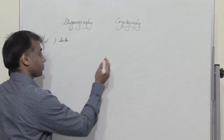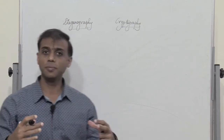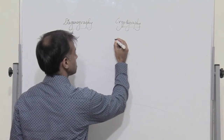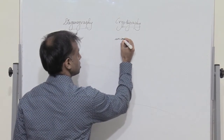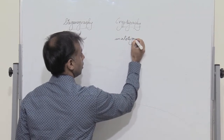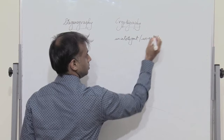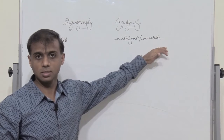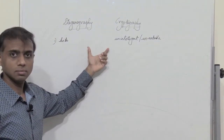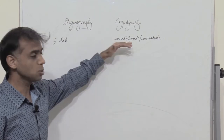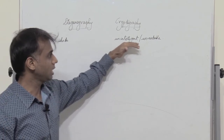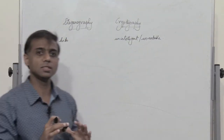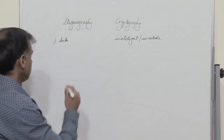In cryptography, the entire information is converted into another format — an unintelligent or unreadable format. In classical encryption techniques, the data itself is converted into another form which appears unintelligent or unreadable. But in steganography, the data remains as it is; it is only hidden and covered.